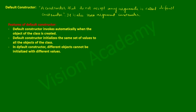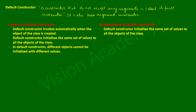The third characteristic feature is that in a default constructor, different objects cannot be initialized with different values. Now, the disadvantages of using a default constructor are: first, it initializes the same set of values to all objects of the class, and second, different objects cannot be initialized with different values.